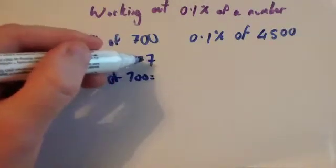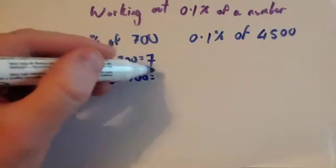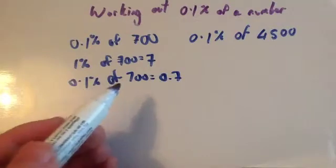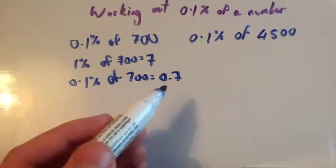You divide the 7 by 10. 7 divided by 10, move the decimal place, 0.7. So 0.1% of 700 would be 0.7.